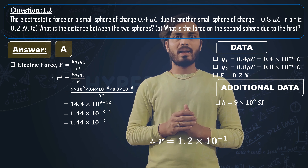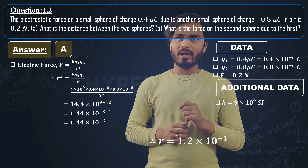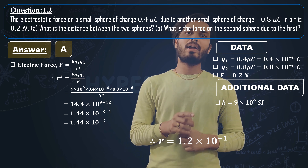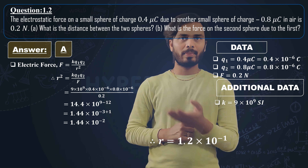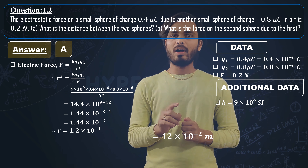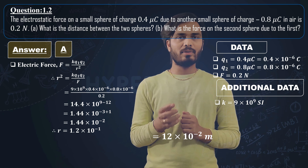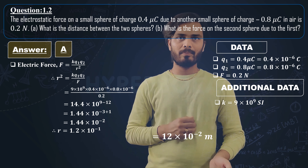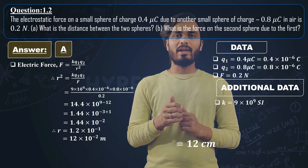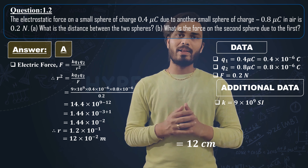Next step: r square is known, now find r by taking the square root. Square root of 1.44 is 1.2, and square root of 10 raise to minus 2 is 10 raise to minus 1. So r equals 1.2 cross 10 raise to minus 1 meter, which equals 12 cross 10 raise to minus 2 meter, that is 12 centimeter. So r equals 12 centimeter is the answer to part one.